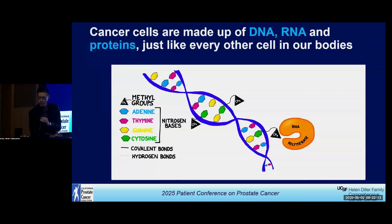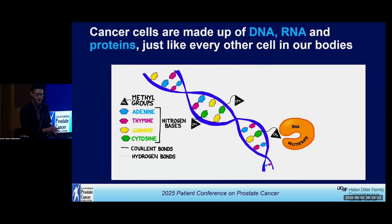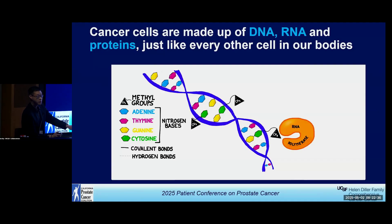I want to take a brief detour back to high school biology to recognize that prostate cancer cells, just like every other cell in our body, are made up of DNA, RNA, and proteins. The DNA is made up of four different bases that we call A, T, G, and C.